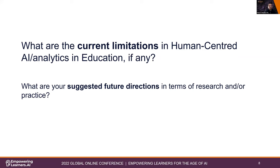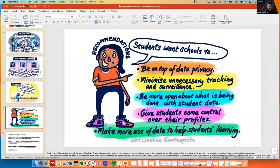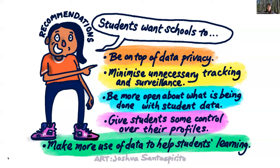Thank you for the first round of responses to this topic. We can see there are already some questions in the chat, but we're going to flow into our second question first. The second question is about the current limitations seen by our speakers in the area of human-centered AI in education, and also how these limitations point to potential future directions. We'll start again with Bronwyn.